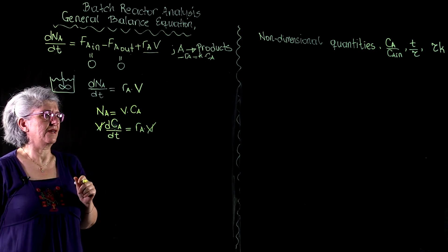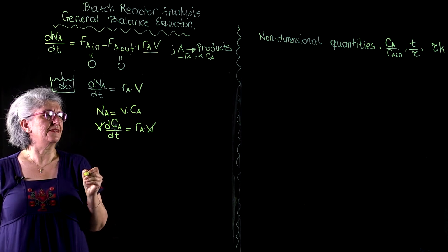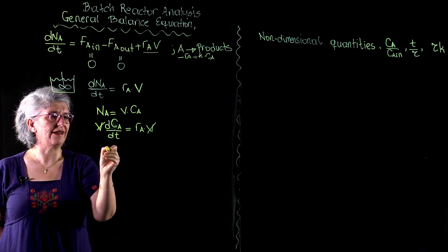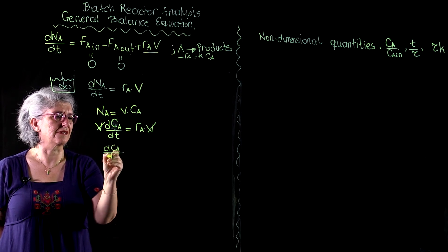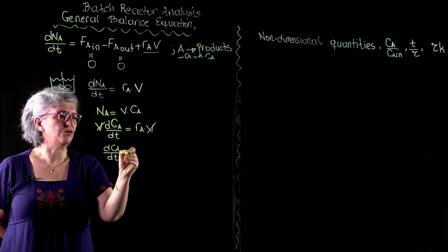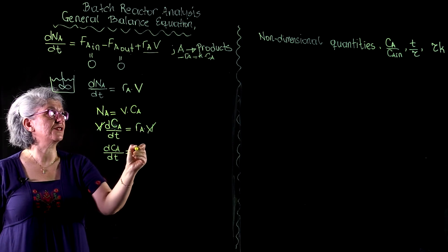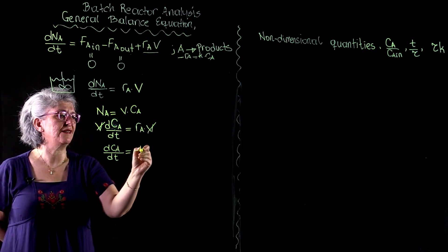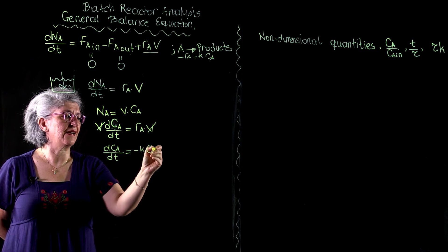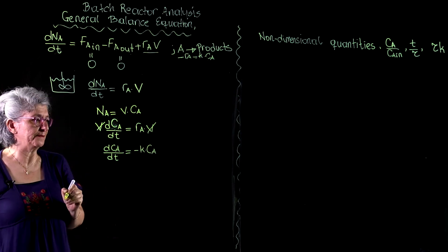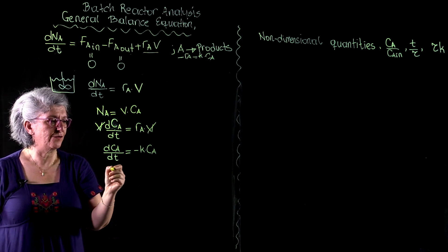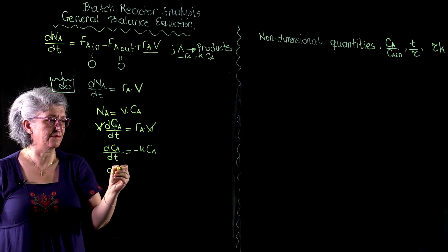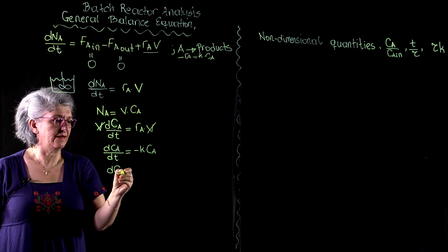And we substitute for Ra. dCa over dt—we substitute for R sub a, which is minus K times Ca, and we integrate, as we have done for a more complex system in the previous video.